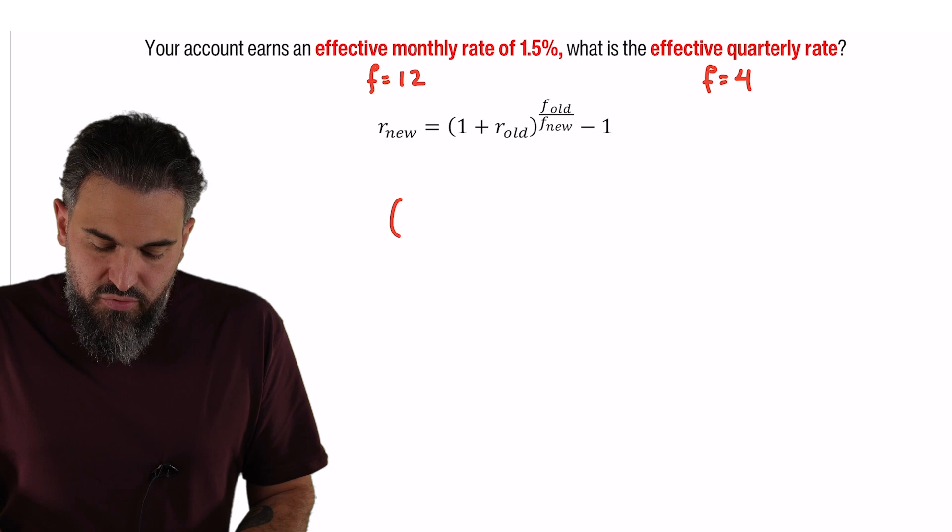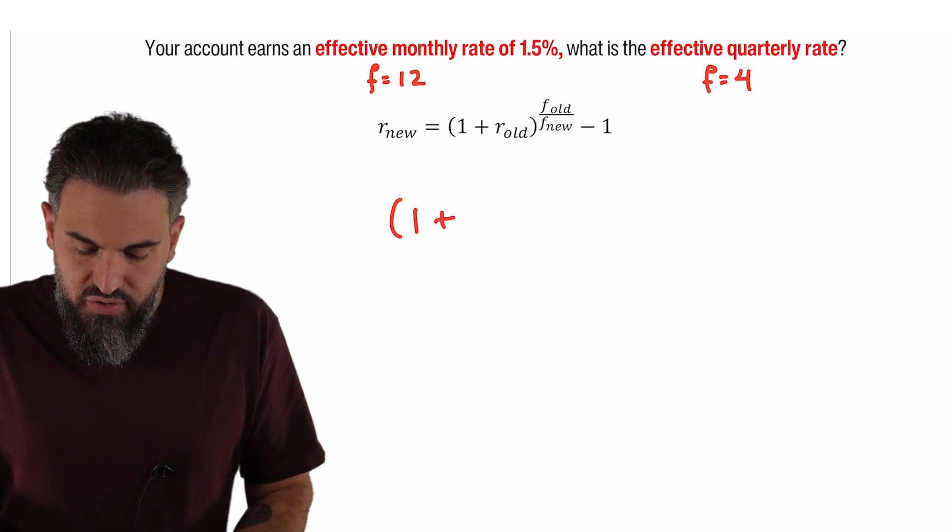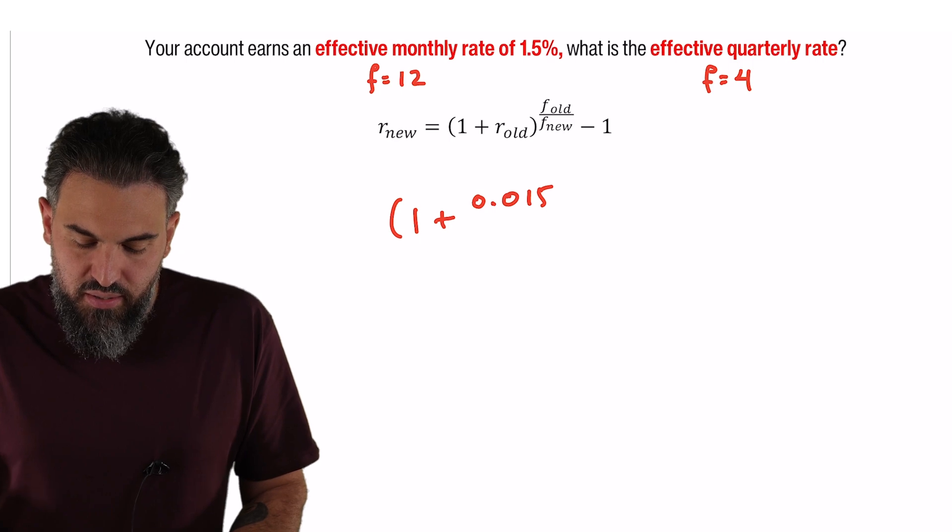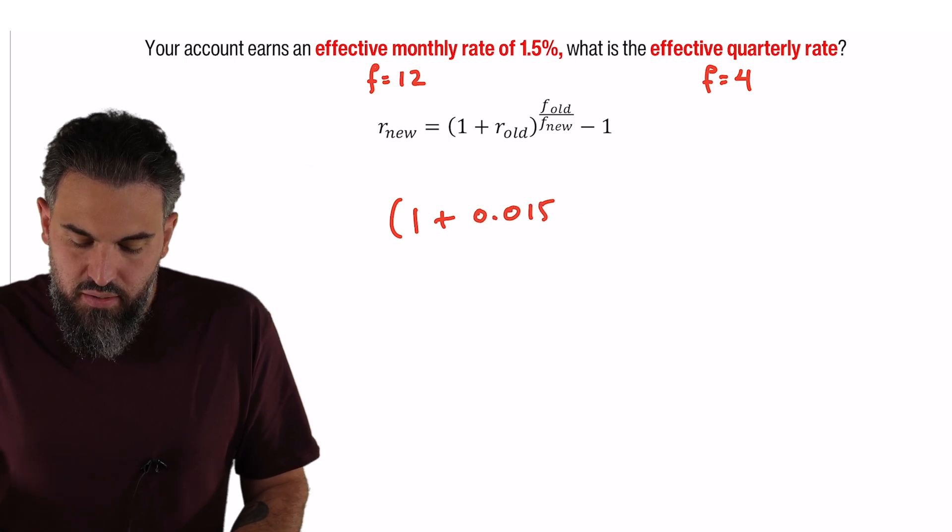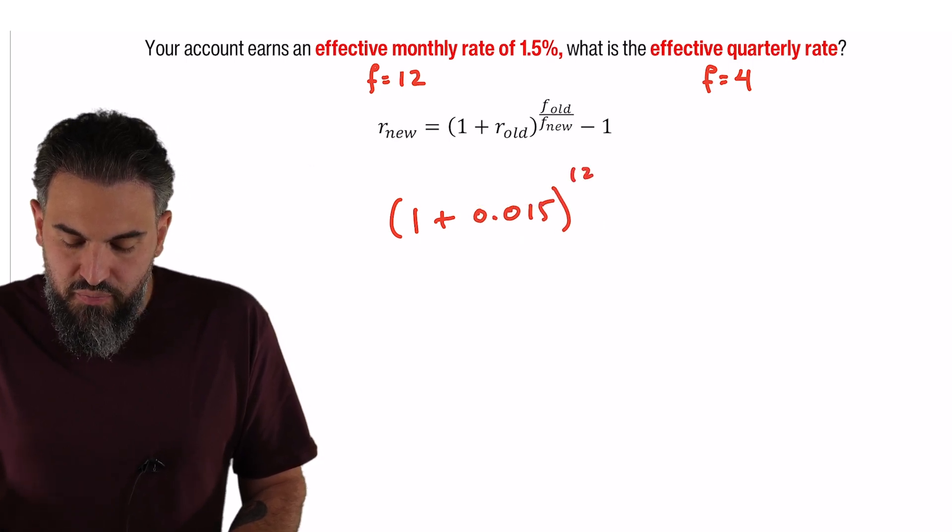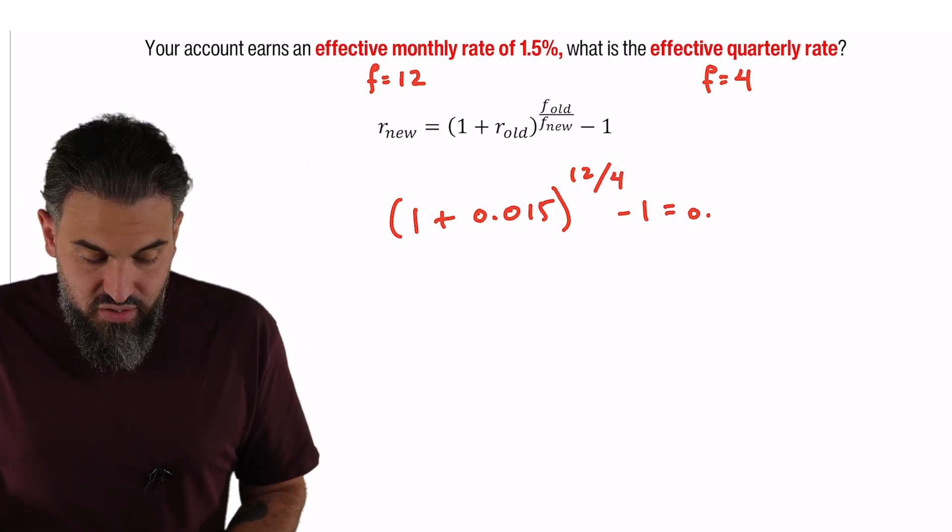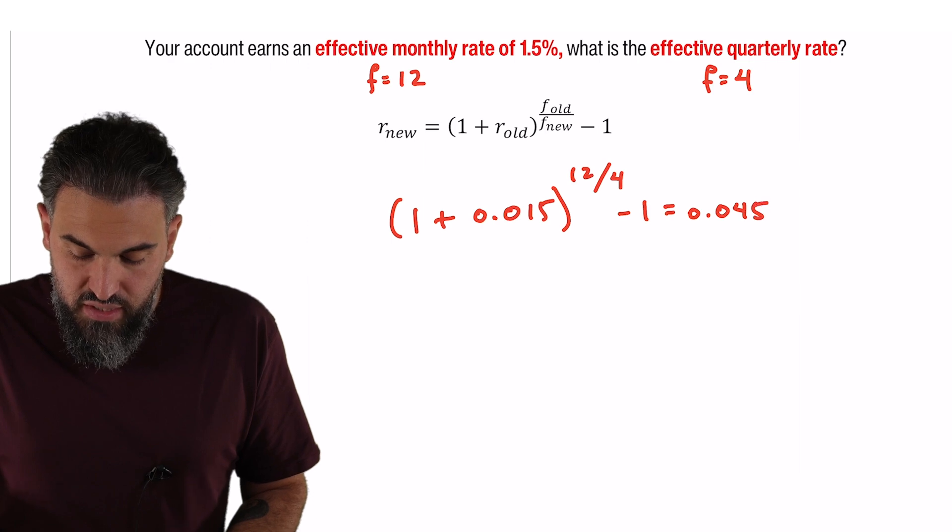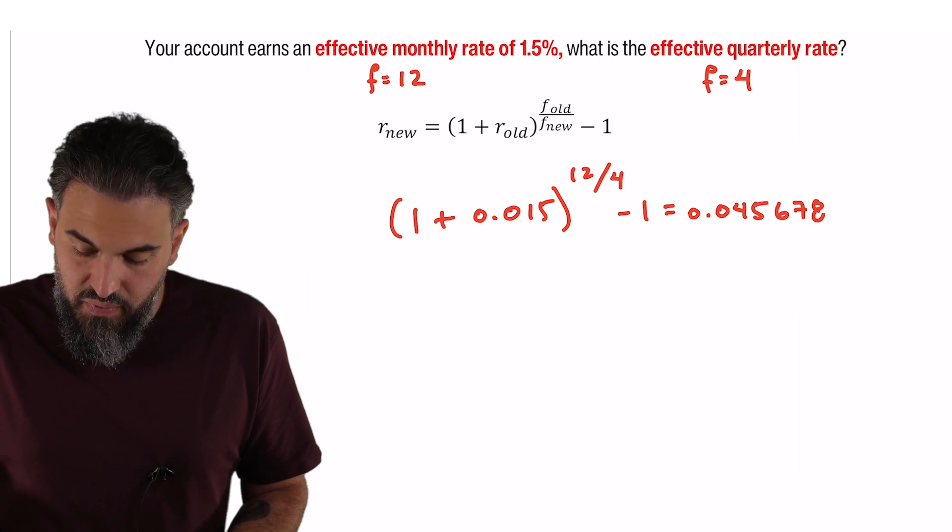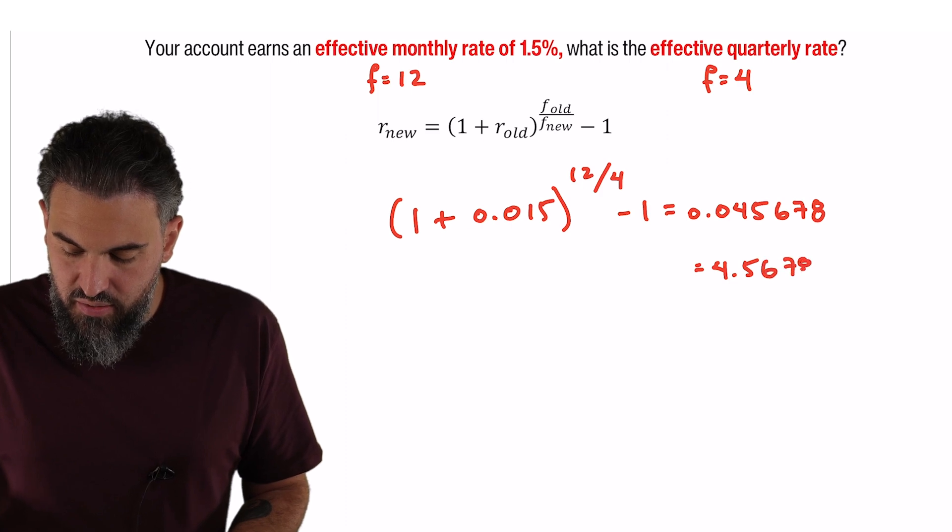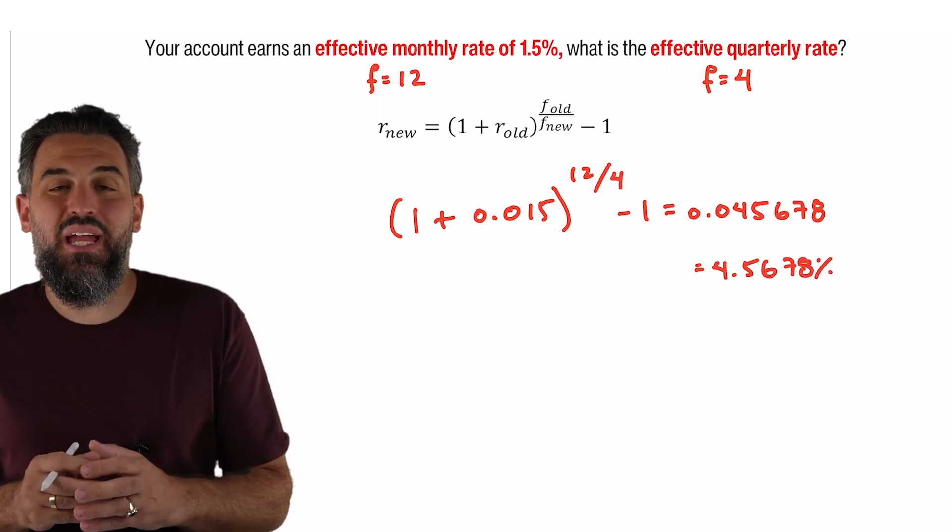So my formula is 1 plus 0.015 to the power of old F, that's 12, over new F, that's 4, minus 1. So I get 0.045678 which is 4.5678 percent. So that is my quarterly rate.